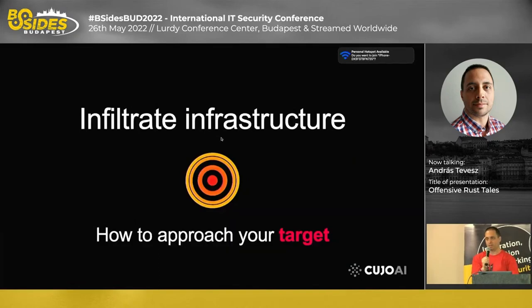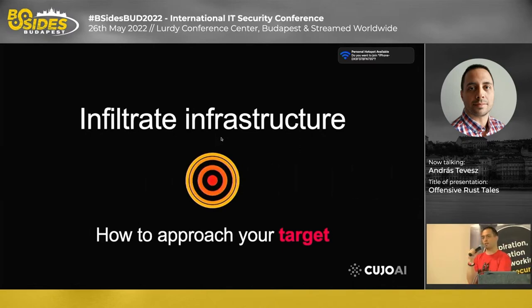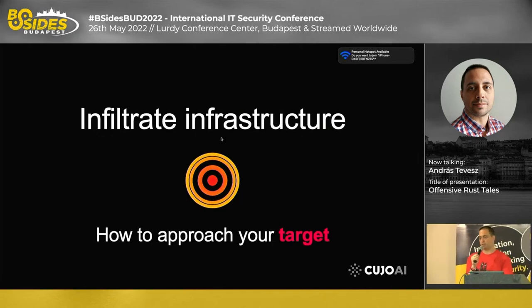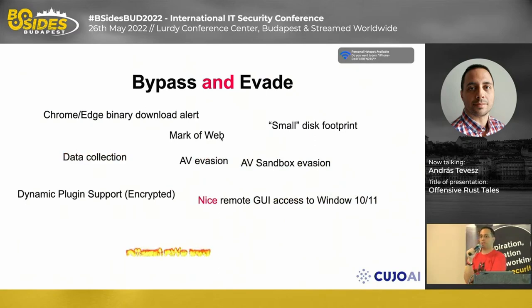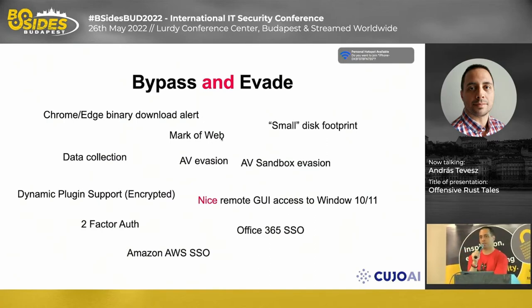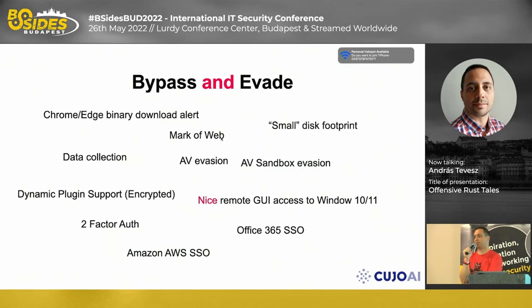Infiltrating infrastructures. We sent an email, the victim downloaded the binary and executed it because he was instructed by his boss. What happens when you download something? If you get an email with a link to an .exe, Chrome and Edge will warn you not to execute it. But you will, because you're human. If you have a binary larger than 65 megabytes, the browser will simply ignore it — it's a big .exe, so we don't scan it.